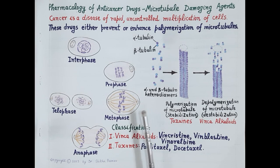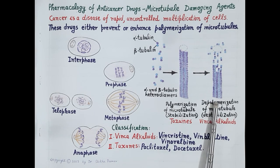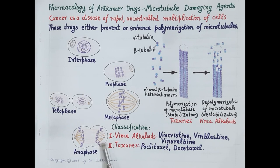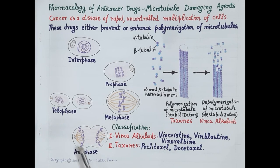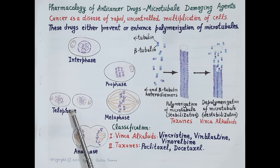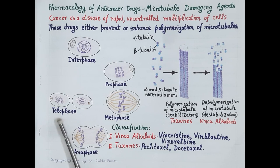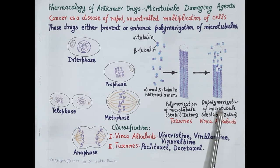When microtubule spindle fibers depolymerize, they shorten in length. Continued depolymerization and shortening of the spindle fibers causes separation of the sister chromatids, which then move toward opposite poles. Each sister chromatid is now considered an individual chromosome, the nucleus divides, and this is followed by the complete division of the parent cell into two daughter cells. It is important to understand that microtubules undergo a constant cycle of polymerization and depolymerization for a cell to divide — this is a highly dynamic process.